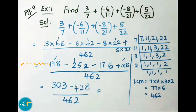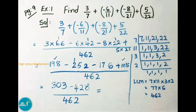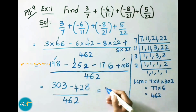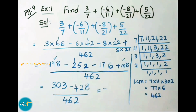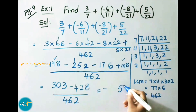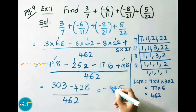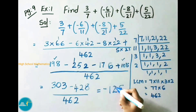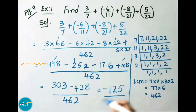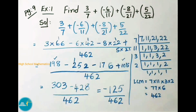Here the two numbers 303 and 428 have different signs, so we do subtraction. Since 428 is greater than 303, the sign is minus. So keep minus sign and do subtraction: 8 minus 3 is 5; 2 minus 0 is 2; 4 minus 3 is 1. So our answer is minus 125 by 462.